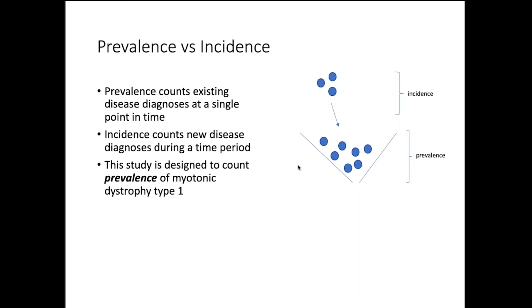It's worth going through some of the differences in how people think about prevalence versus incidence as we think about this study. So prevalence is defined as counting the existing disease diagnoses at a single point in time, and incidence counts new disease diagnoses during a time period. This study, which did use a newborn blood spot population, is really thought of as a cohort study. In other words, it's really designed to count the prevalence of myotonic dystrophy type 1, since we didn't model the cases coming in or leaving.